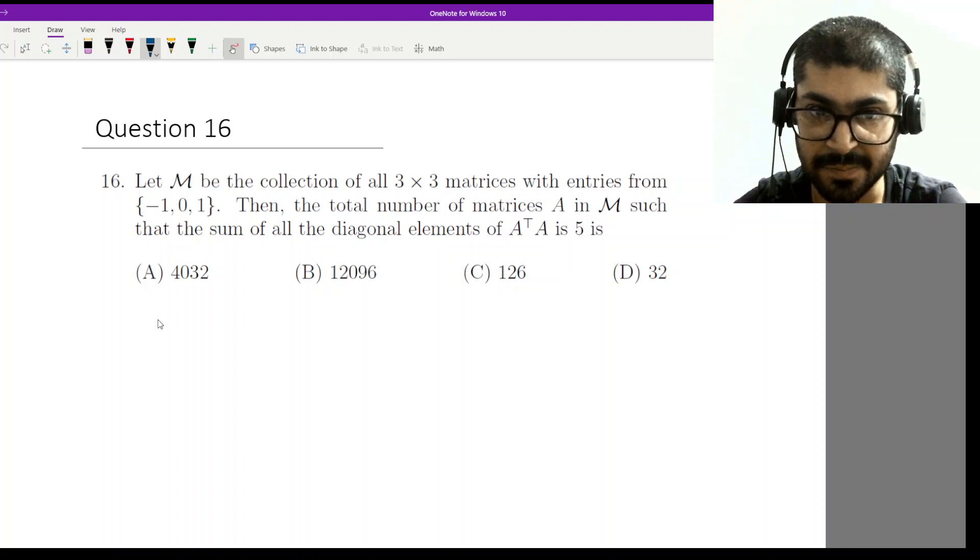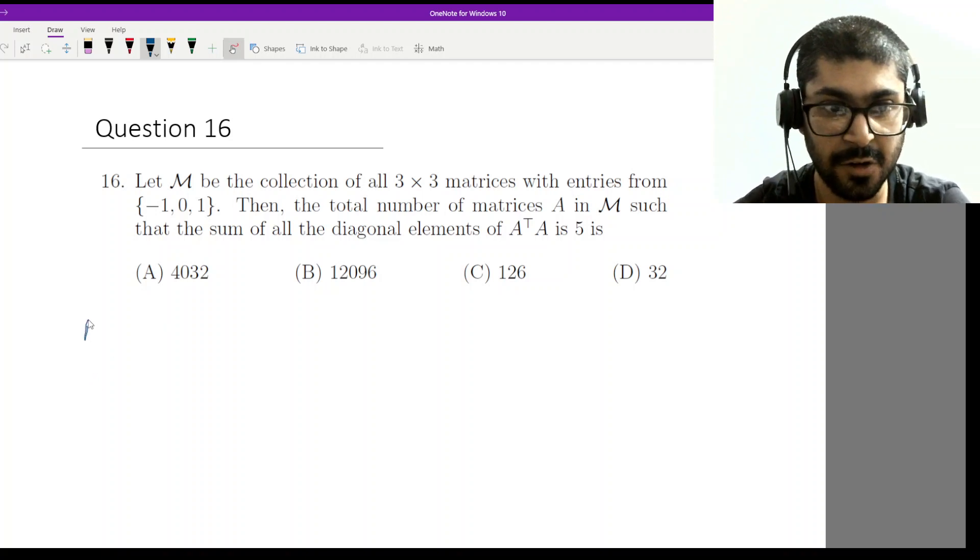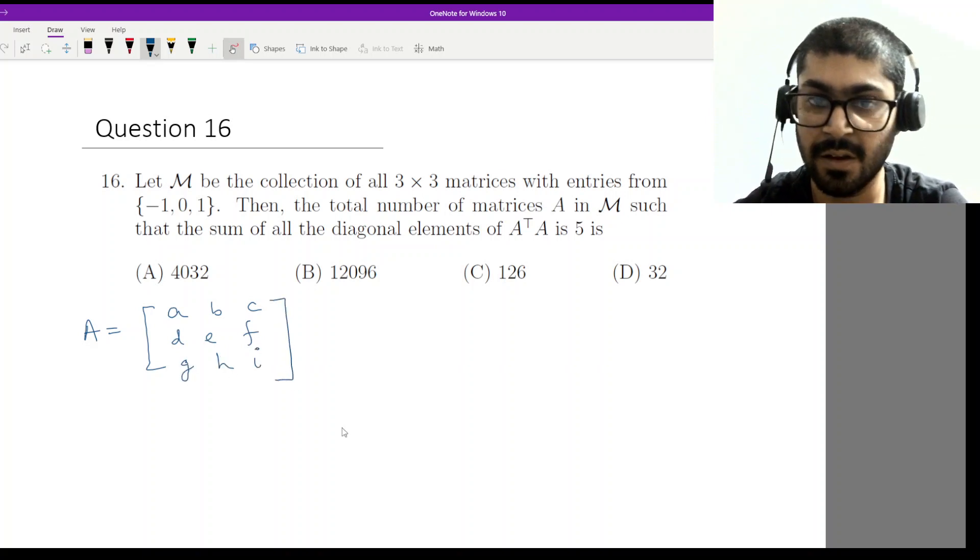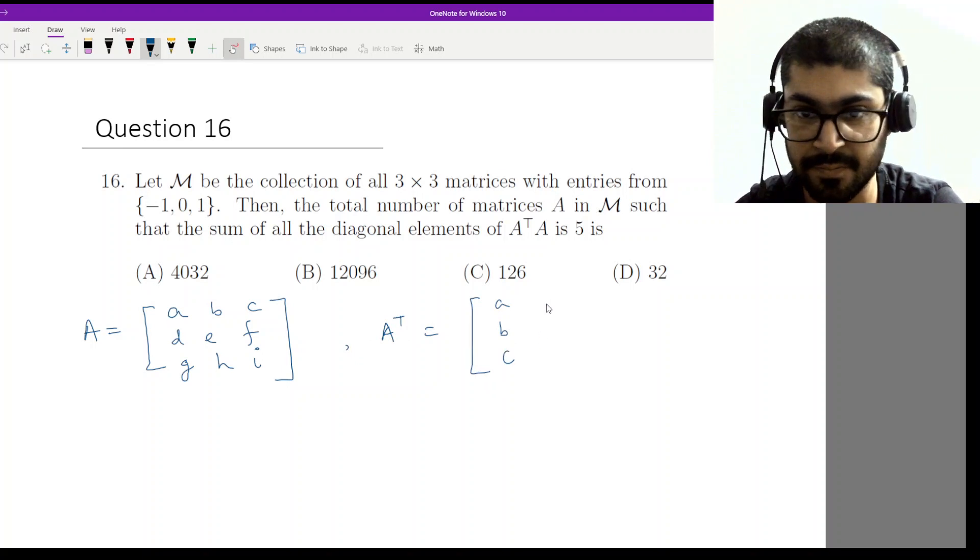Now we start with a general 3×3 matrix. So let A equal to [a, b, c; d, e, f; g, h, i]. What will be A transpose? A transpose will be rows become columns.